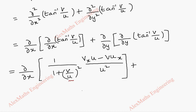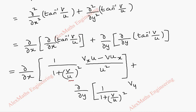In the same way, for the second term, it is dou by dou y of the same expression, but with respect to y. So we have 1 by 1 plus (v by u) whole squared, times vy times u minus v times uy, all divided by u squared.